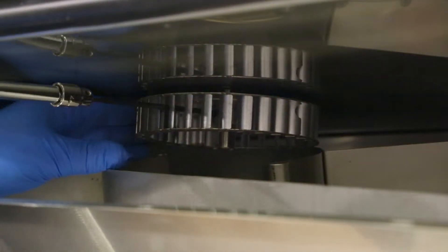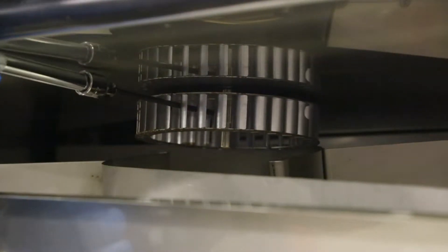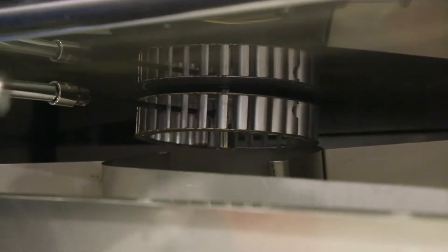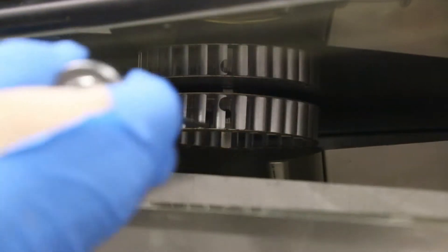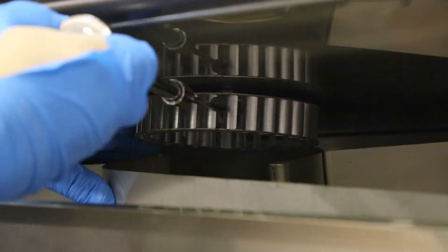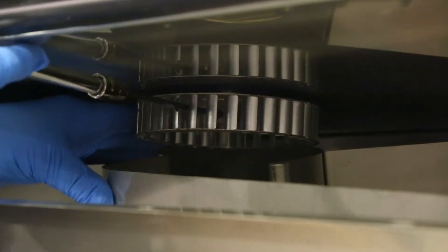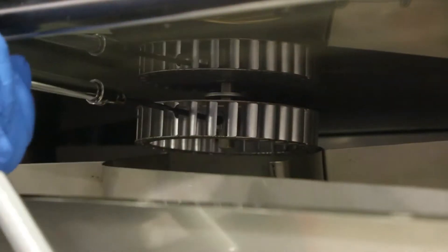There are two set screws on the fan wheel that need to be loosened with a five inch long M4 Allen wrench. Once loose, you can slide the fan wheel off the shaft.